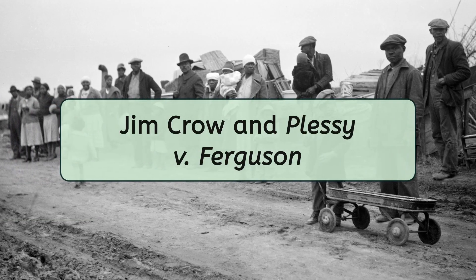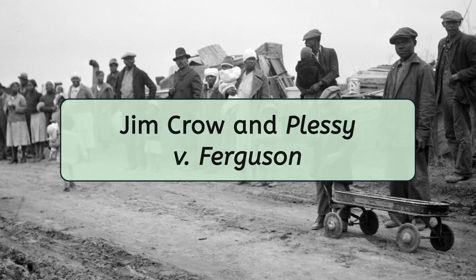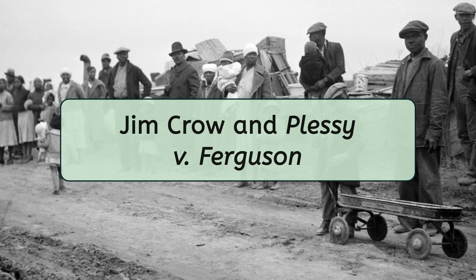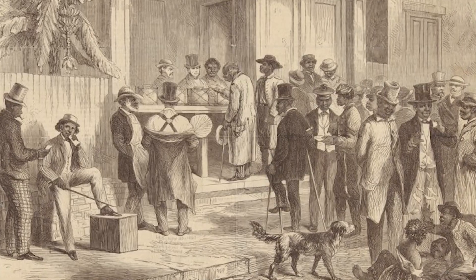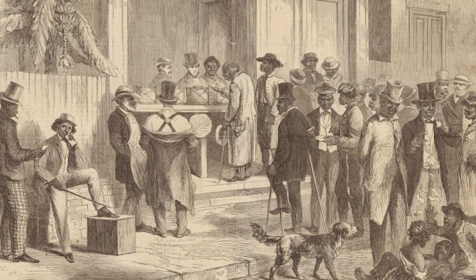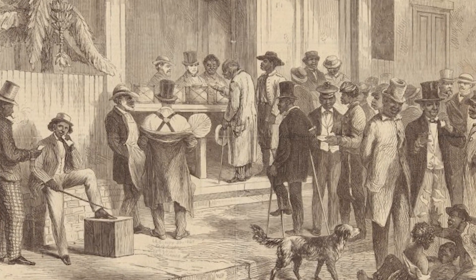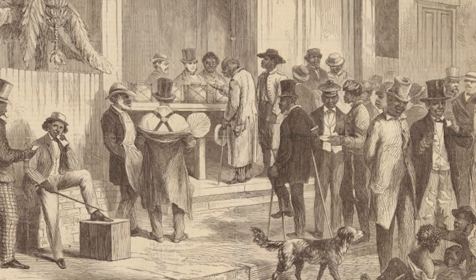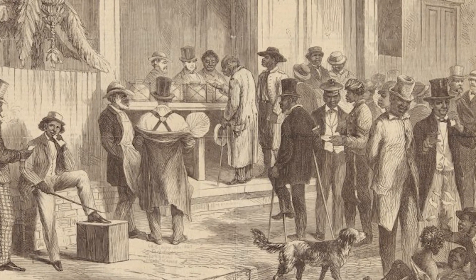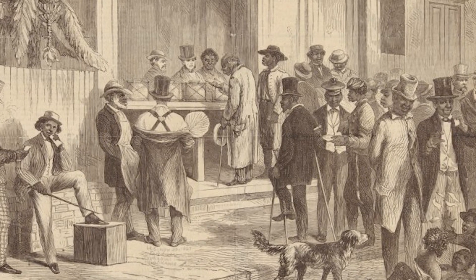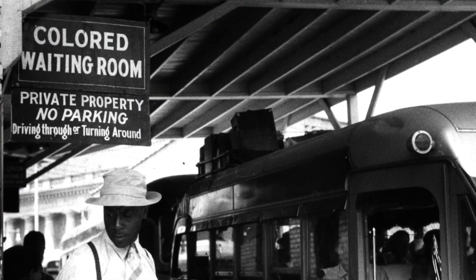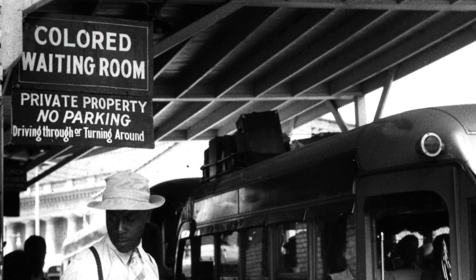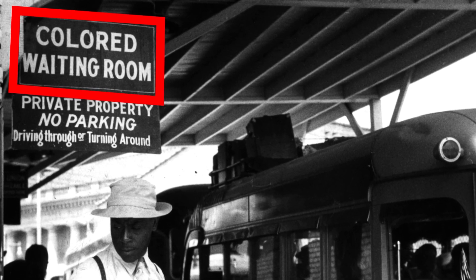Over time, the New South, to a certain extent, began to resemble the North. White supremacy and laws that made it hard for Black people to vote, such as literacy tests, poll taxes, and grandfather clauses, became especially widespread by the 1890s. Southern governments legally required racial segregation, or separation in public places, beginning a period called the Jim Crow era.